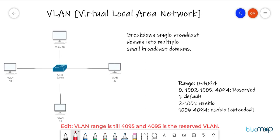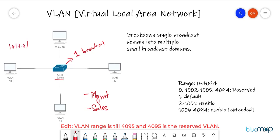Before we get started, let's talk about the scenario — the problem we could face when we don't have any VLANs. Let's say I have a Cisco switch and in my organization I have two departments: a management department and a sales department. If I connect all of them to a switch, it's a single broadcast domain, meaning all these PCs will start communicating with each other.